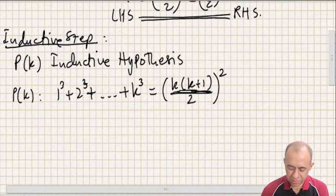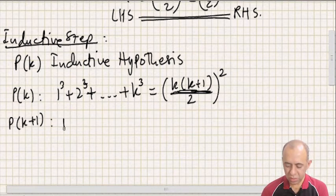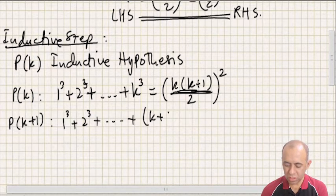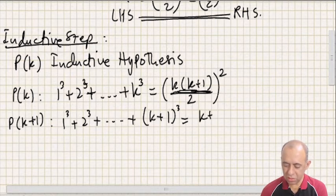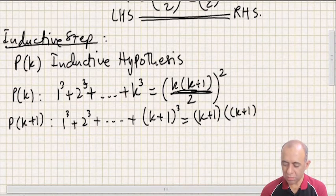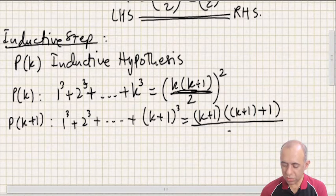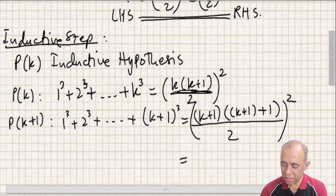Similarly, we write P(k+1): 1³ + 2³ + ... + (k+1)³ equals the right-hand side with n substituted by k+1, which is [(k+1)(k+1+1)/2]².